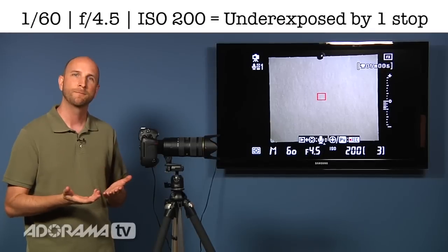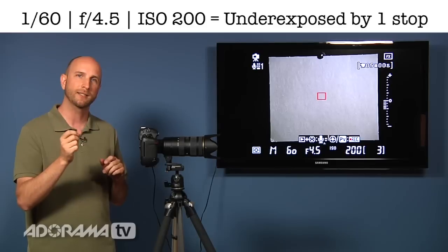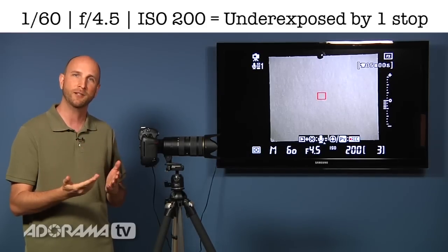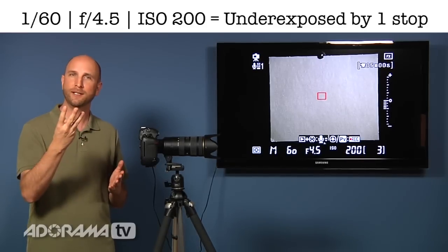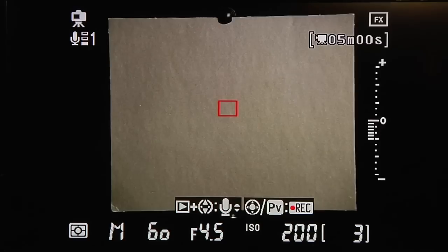Well, how do I fix that? The nice thing is, the dials on all of our new DSLRs, they have clicks. Those clicks are third stop increments, so I know if I click the dial three times, I'm going a full stop. So, I'm going to open up the aperture three clicks, which is a full stop.